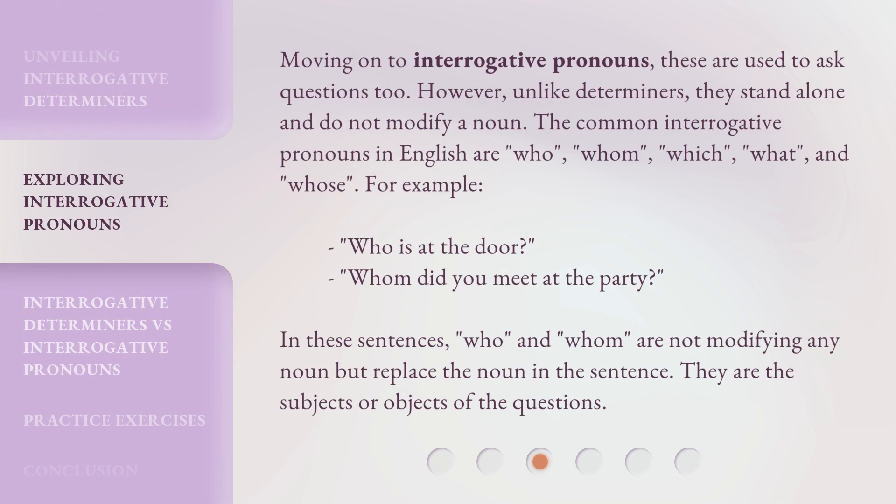Moving on to interrogative pronouns, these are used to ask questions too. However, unlike determiners, they stand alone and do not modify a noun. The common interrogative pronouns in English are who, whom, which, what, and whose. For example, 'Who is at the door?' or 'Whom did you meet at the party?' In these sentences, 'who' and 'whom' are not modifying any noun but replace the noun in the sentence. They are the subjects or objects of the questions.